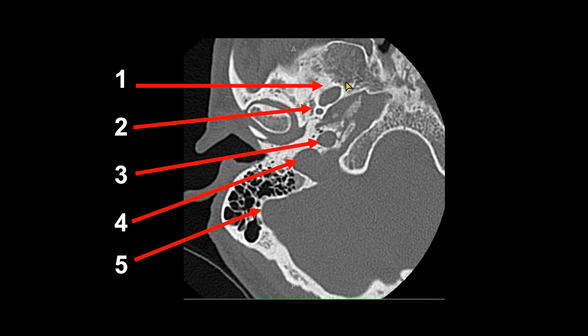Number three is the carotid canal. We're just at the level of the foramen lacerum, where the petrous portion of the internal carotid artery runs over top of it. Number four is the jugular foramen, where the jugular vein is transmitted along with cranial nerves 9, 10, and 11 in the pars nervosa and pars vascularis. Number five shows the sigmoid sinus junction with the transverse sinus; some people refer to the overlying bone as the sigmoid plate.